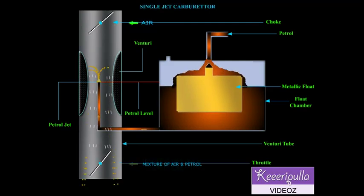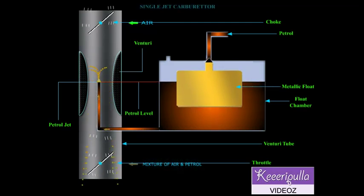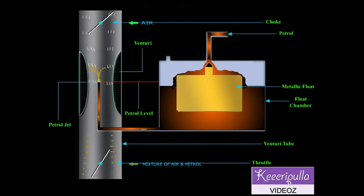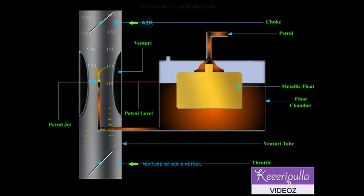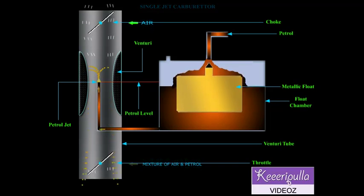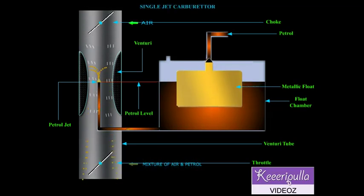Air is drawn through the choke valve and passes through the venturi. Its velocity increases and pressure at the venturi throat decreases due to the reduction in the cross sectional area.